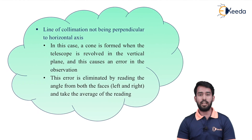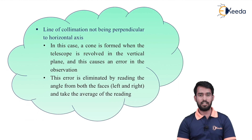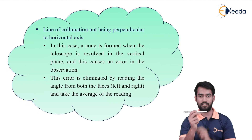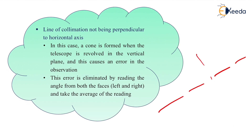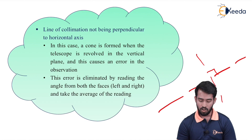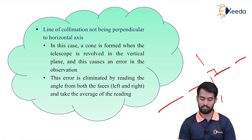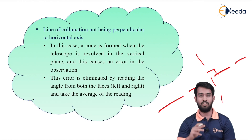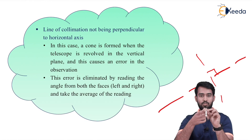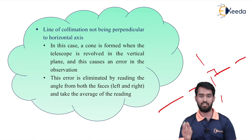Next is the line of collimation not being perpendicular to the horizontal axis. The line of sight through which we are bisecting should always be perpendicular to the horizontal axis. If it is not, a cone is formed when the telescope is revolved in the vertical plane, and this causes an error in the observation. This error is eliminated by reading the angle from both faces — face right as well as face left. We have to take two sets, face left and face right, to eliminate this type of permanent error.